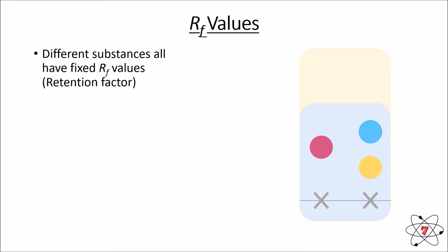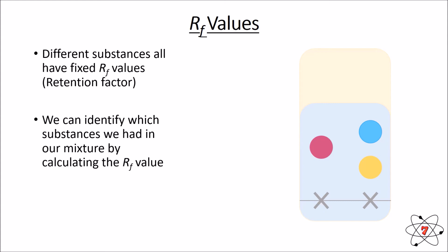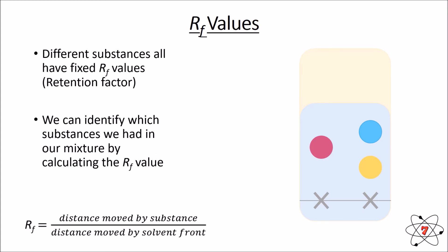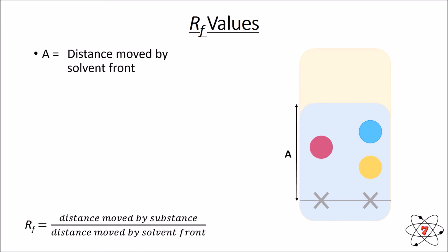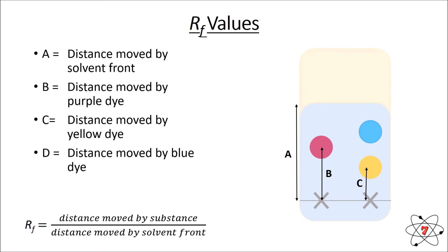We can also work out what substances we have within our chromatograms by calculating something called an RF value. All different substances have a fixed RF value, or retention factor, and we can identify which substances we have by calculating this value. The RF value is equal to the distance moved by the substance divided by the distance moved by the solvent front. The solvent front is the top of the solvent — how far it has moved up the chromatography paper. We measure the solvent front (call it A), then measure the distance moved by the purple dye, yellow dye, and blue dye using a ruler, taking the center point of each dye and measuring from the pencil line.